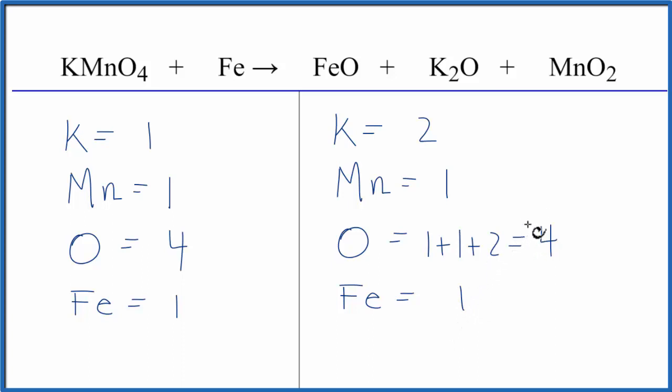Looks like it should be fairly easy. If we put a two in front of the KMnO4, this two applies to everything. So one times two, those are balanced, one times two. And then two times the four oxygens, that gives us eight. So maybe not as easy as we thought at first.